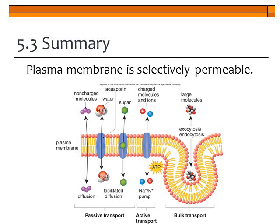This slide summarizes the different types of transport: passive transport (diffusion or facilitated diffusion), active transport which uses energy to go against a concentration gradient, and bulk transport which includes either exocytosis or endocytosis.